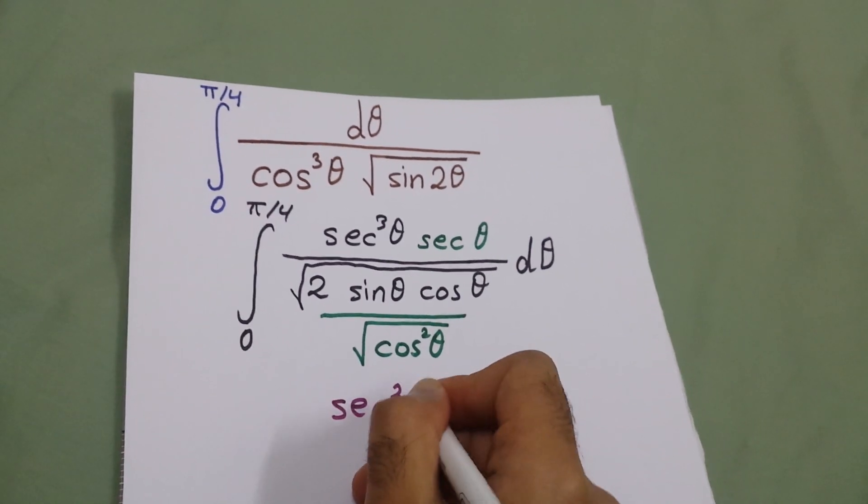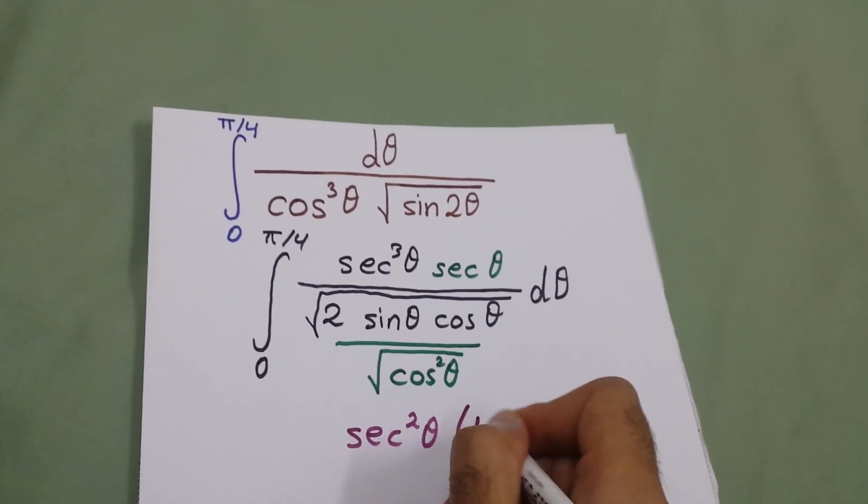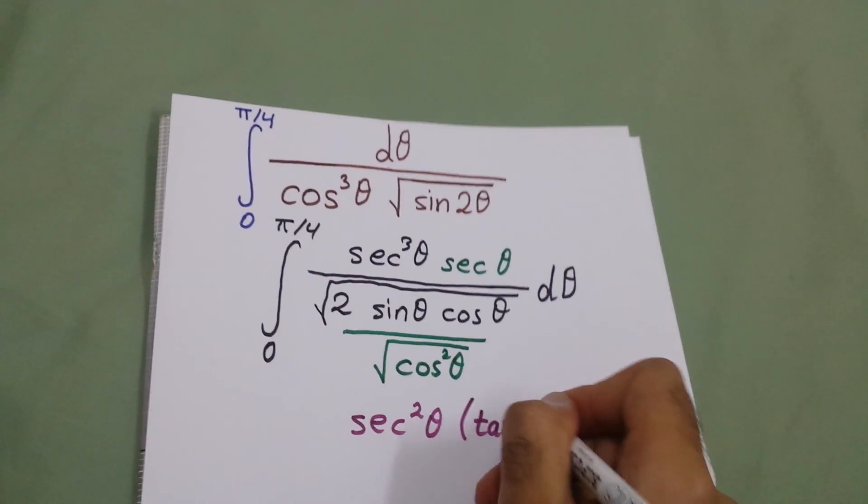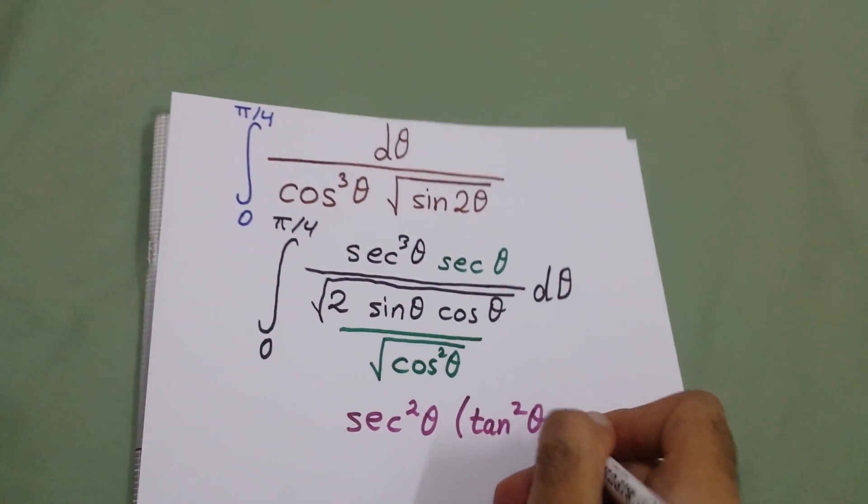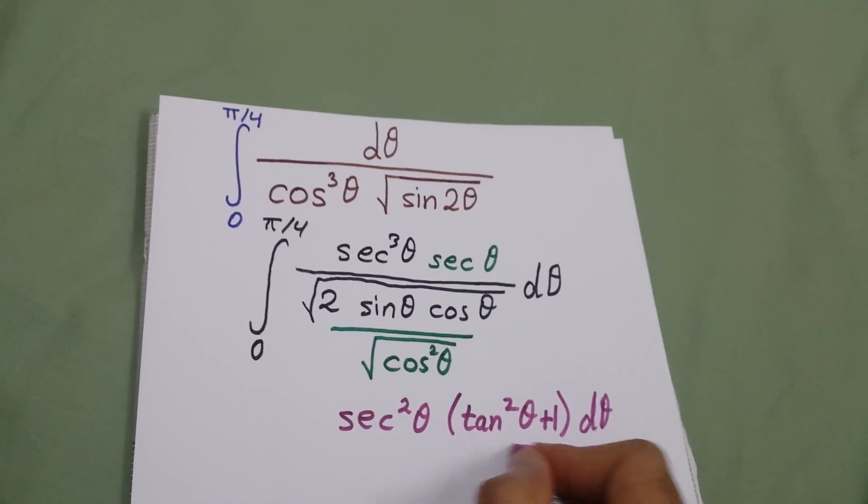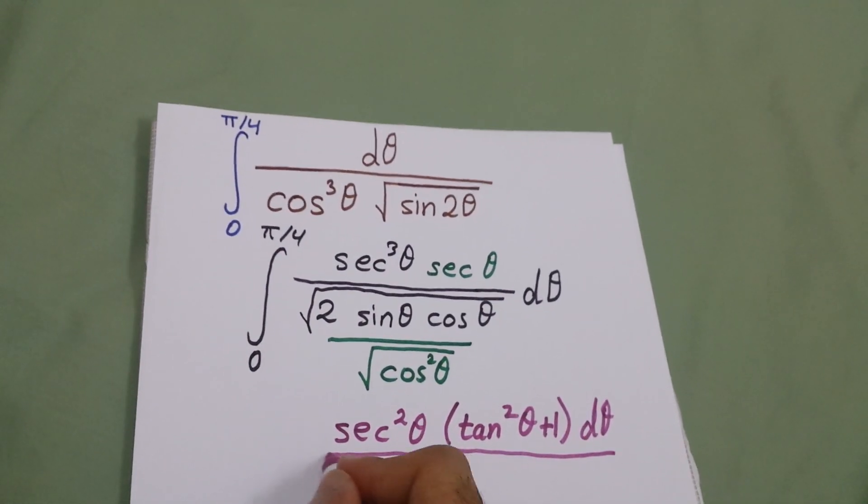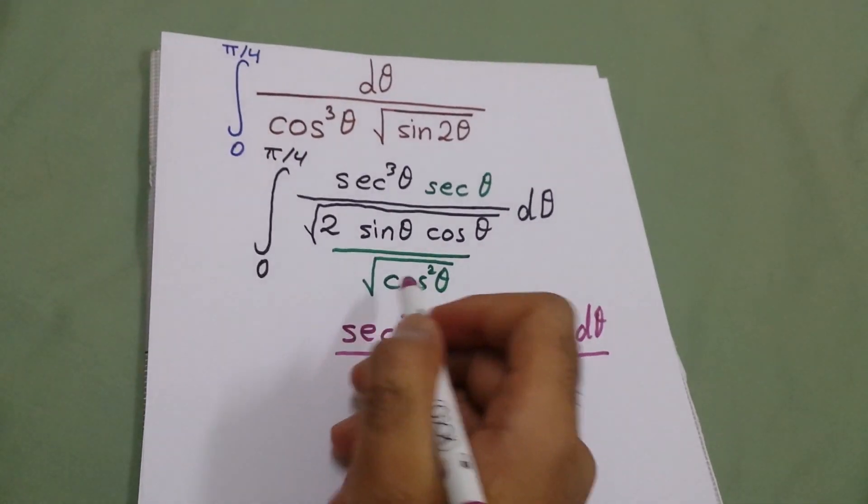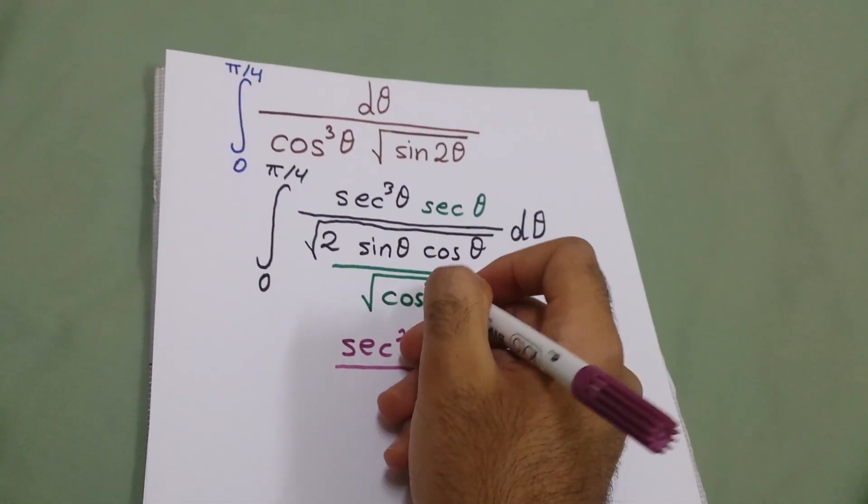square times secant square, which is tan squared plus 1. Over here we have cosine and cosine, it will go with the square.